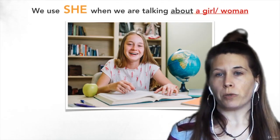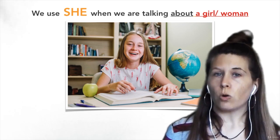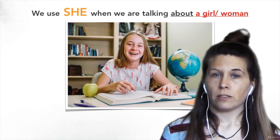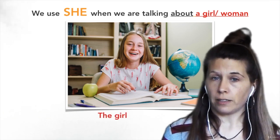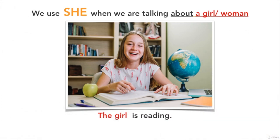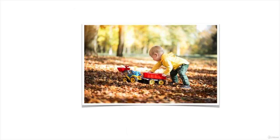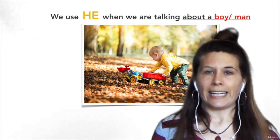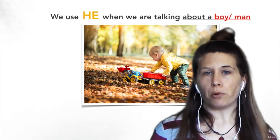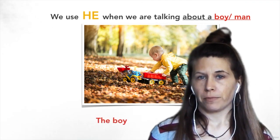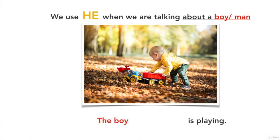We use she when we are talking about a girl or a woman. The girl is reading. The girl — she — is reading. We use he when we are talking about a boy or a man. The boy is playing. The boy — he — is playing.